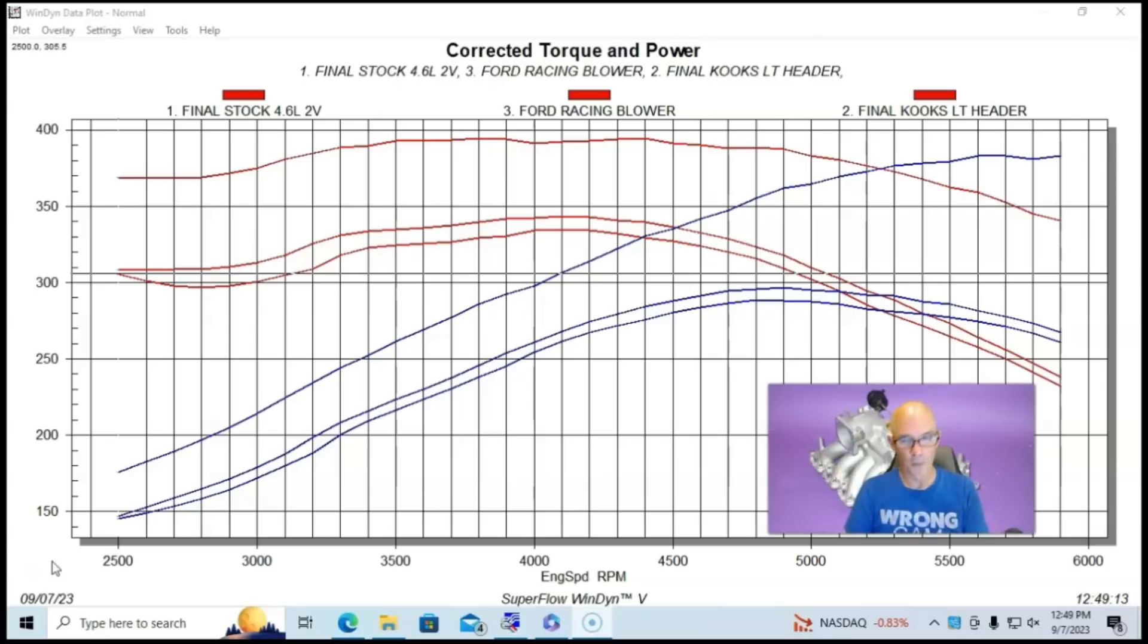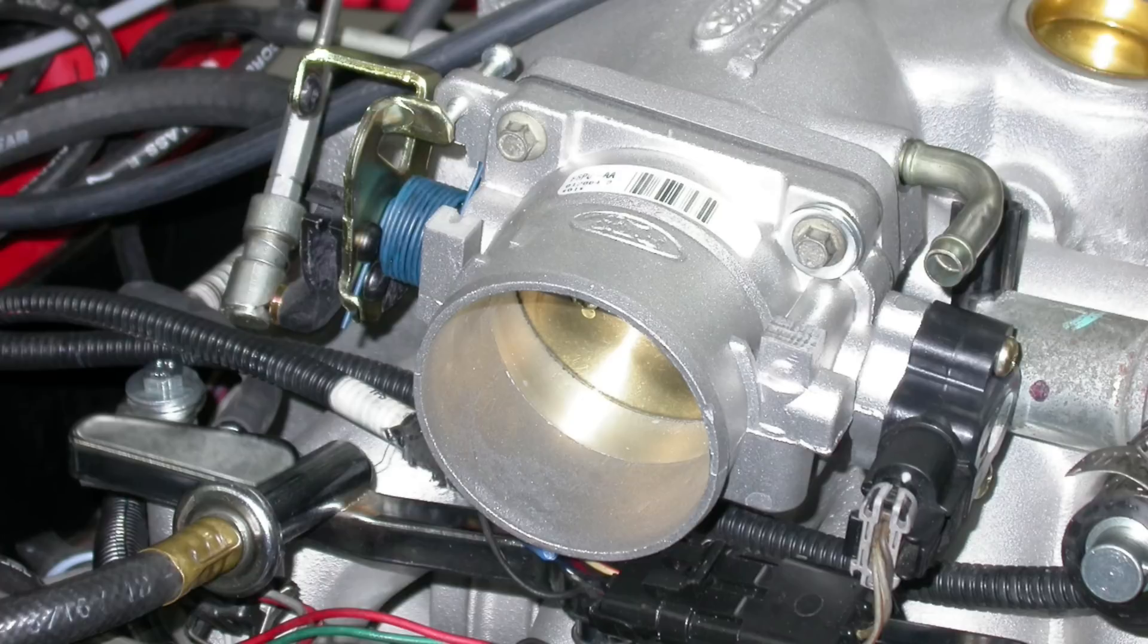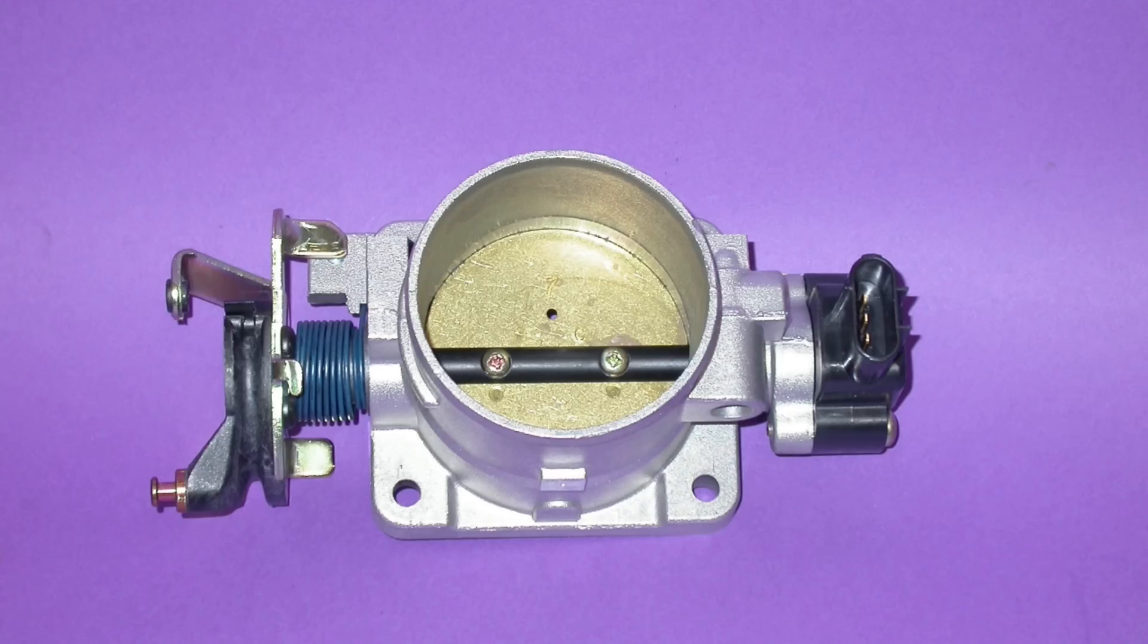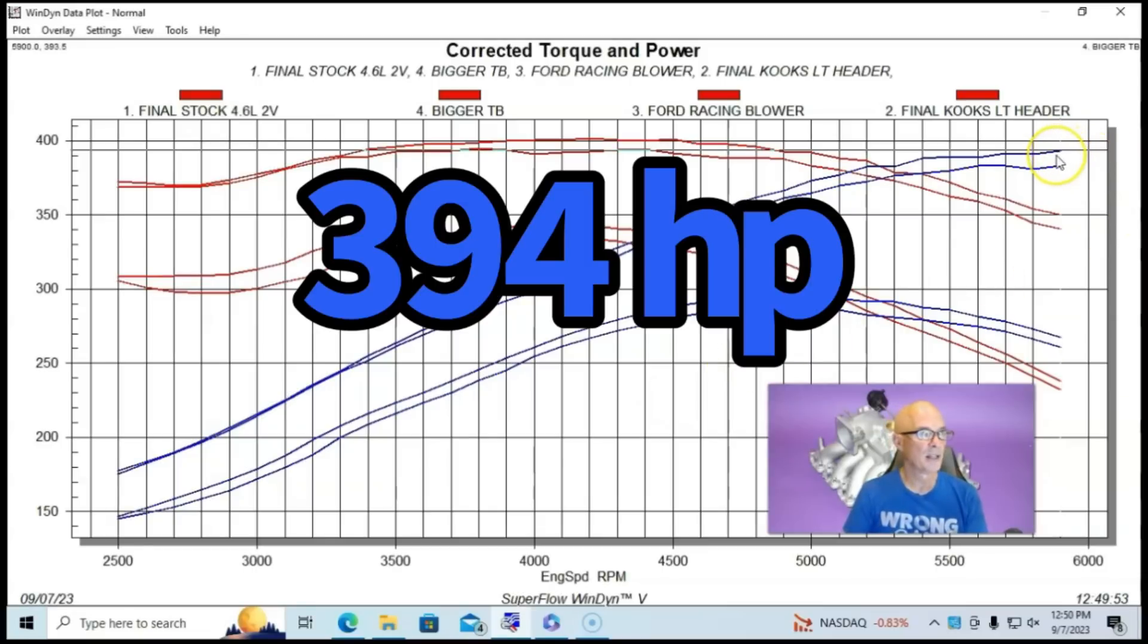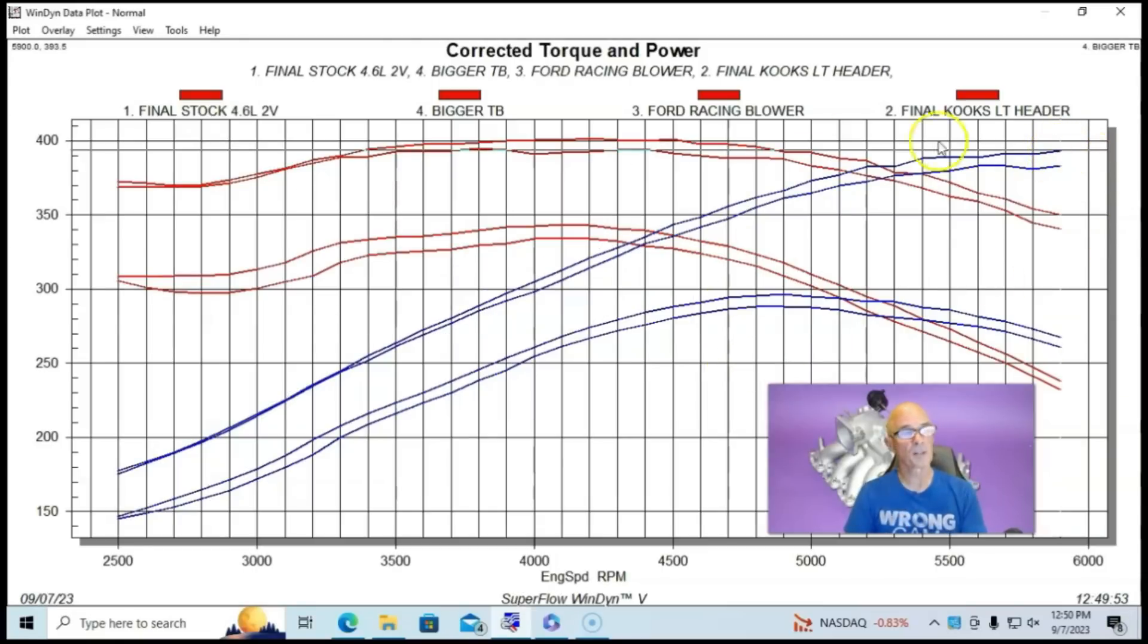Well, we kept the motor stock basically for now, but we did change a couple of things. The first thing we did was add a bigger throttle body. And this was a Ford Racing throttle body that we bolted on and that picked up power. Obviously, peak power was now up to 394 horsepower. So we were getting close.